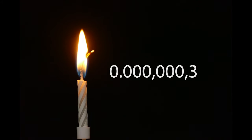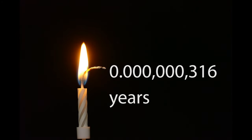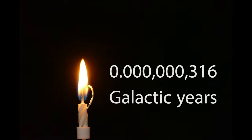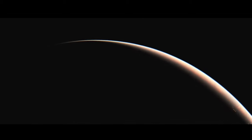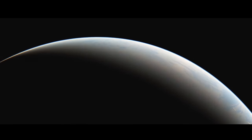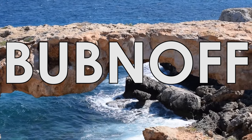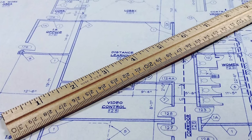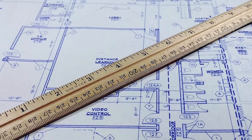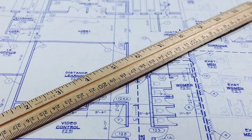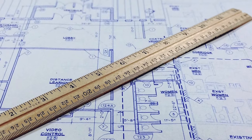The average human has a lifespan of about 0.0000000316 years — galactic years, that is. Interestingly, this figure is also close to the length of a nano-century at 3.156 seconds, and both come very close to the number of pi. From Bubnoff to the mighty SphereDrop, here are some of the most peculiar units of measurement that have been used both informally and in everyday science.